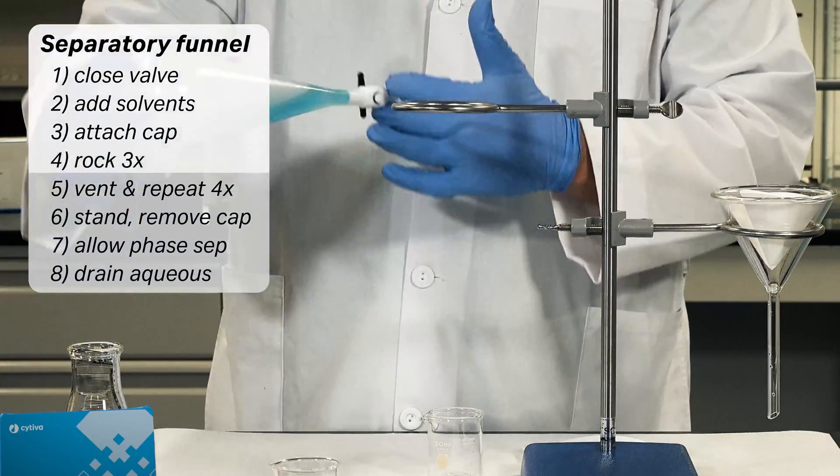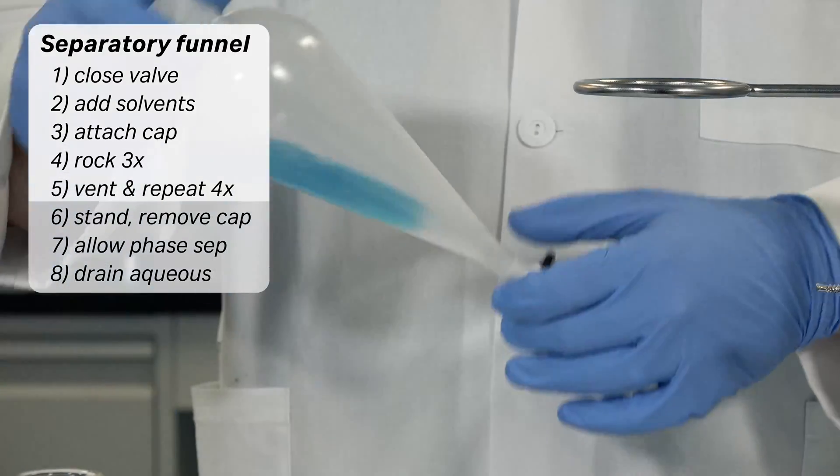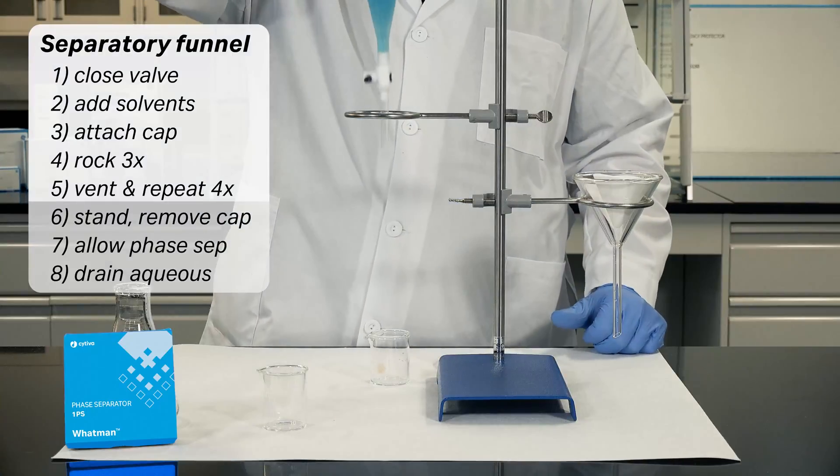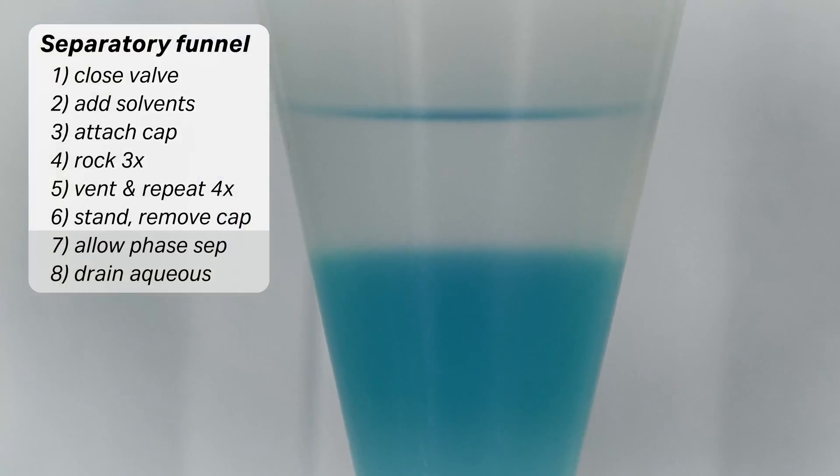Rock the separatory funnel back and forth three times. Vent the separatory funnel to prevent the buildup of pressure. Repeat this process four times. Place the separatory funnel in the ring stand and remove the screw cap.